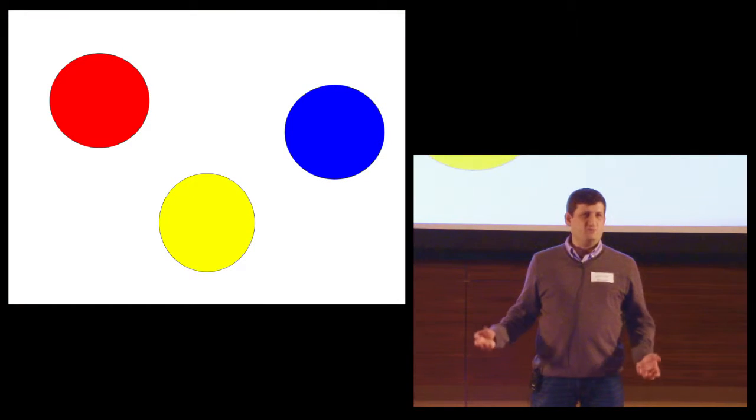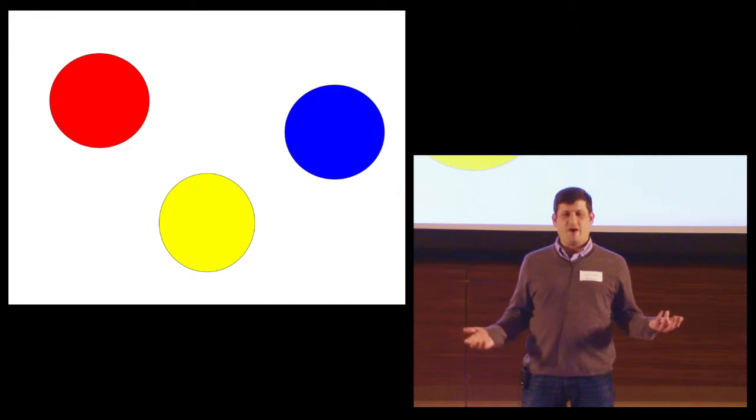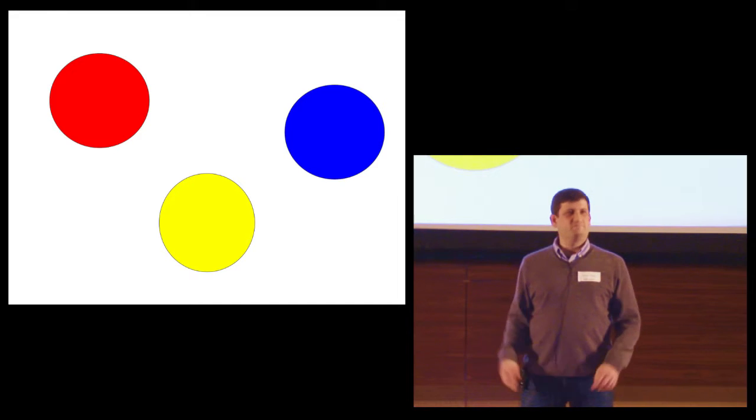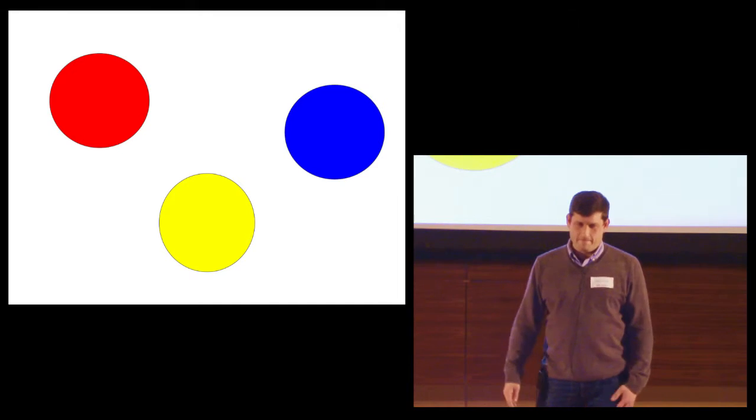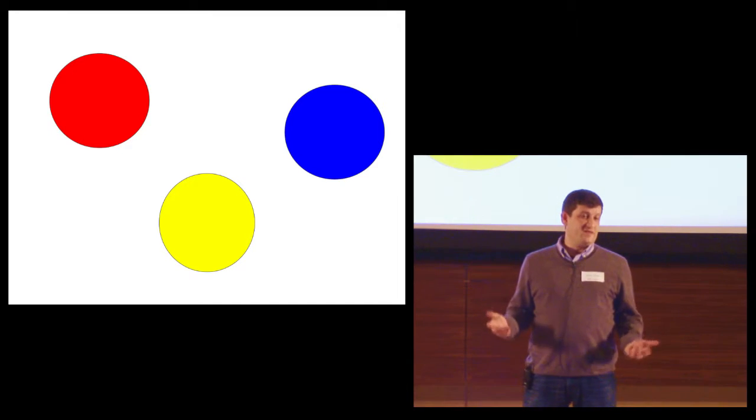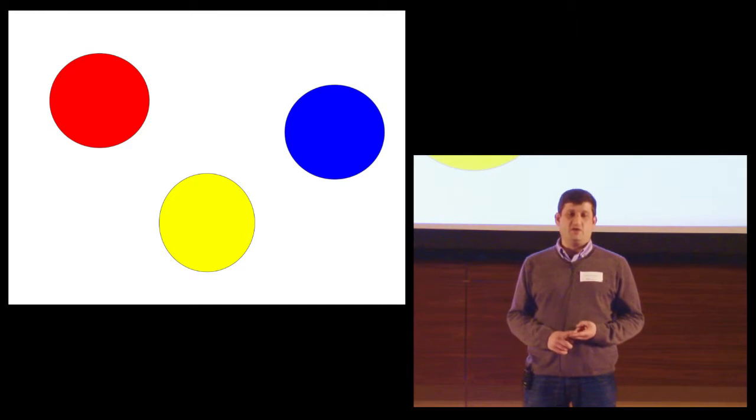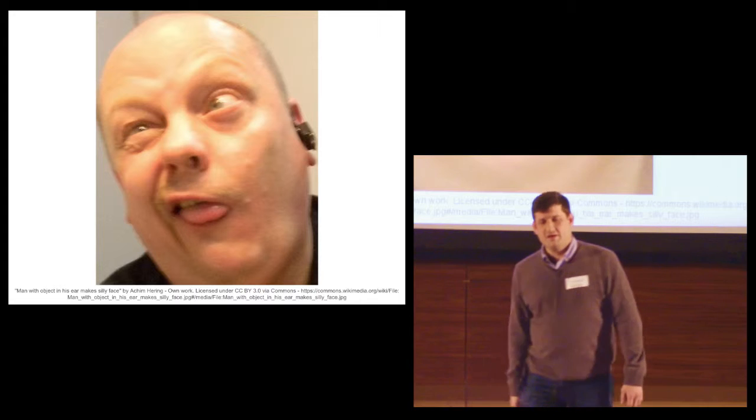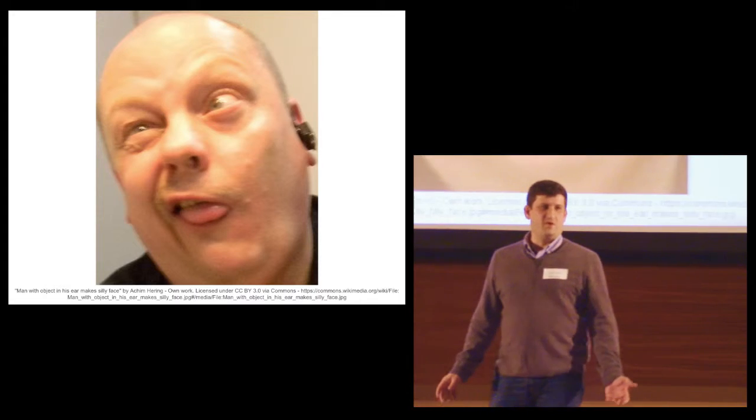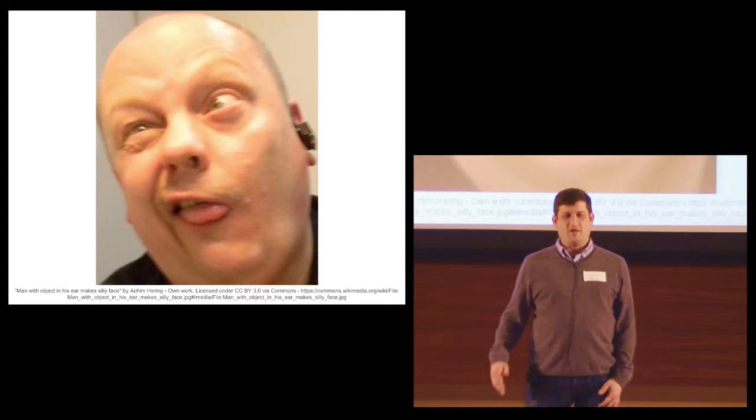But identifying a perfect circle is hard. Which one's really round? On this projector, probably none of them. Not so with human faces. We're neurologically hardwired to identify any skew, asymmetry, or imperfection in a human face. The slightest deviation from the norm, and suddenly things start to look monstrous.